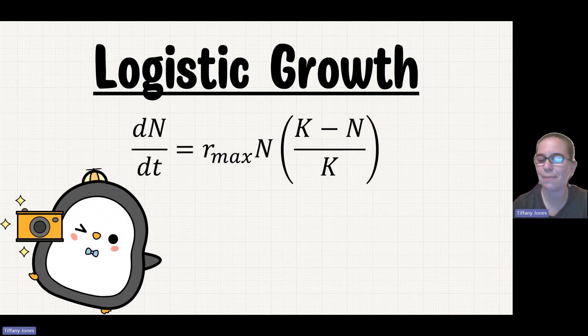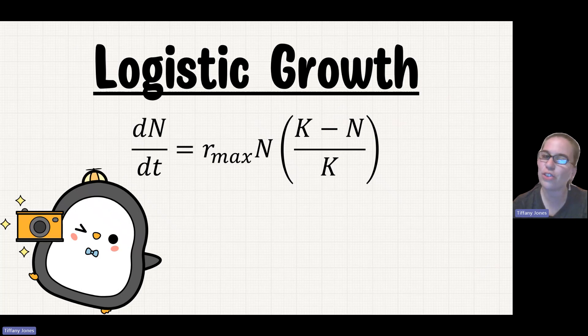dN over dt is equal to rmax times N times K minus N over K, where dN over dt is the change in population size over time, rmax is your intrinsic rate of increase, N is your population size, and K is your carrying capacity.